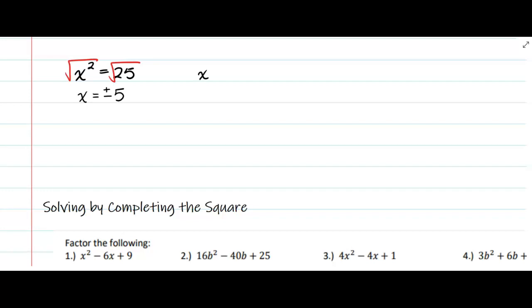We could make it even more complicated. We could have something that looks like this: (x - 7)² equals 36.